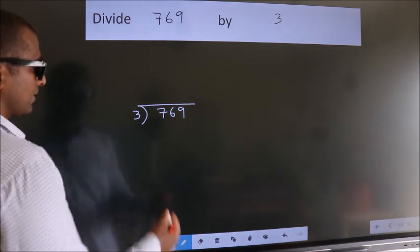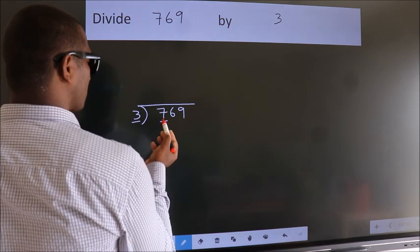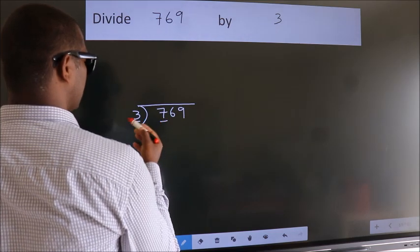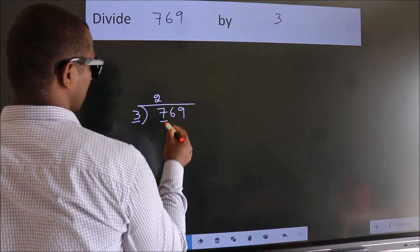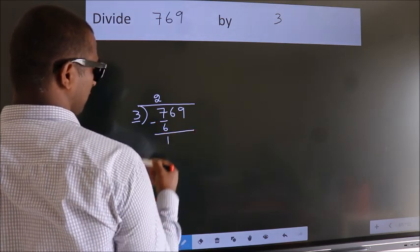Next, here we have 7, here 3. A number close to 7 in the 3 table is 3 times 2 equals 6. Now we should subtract. We get 1.